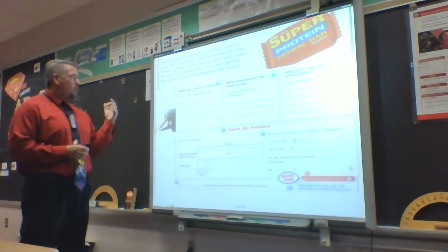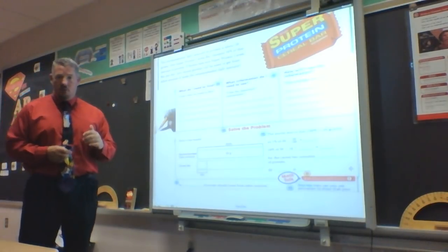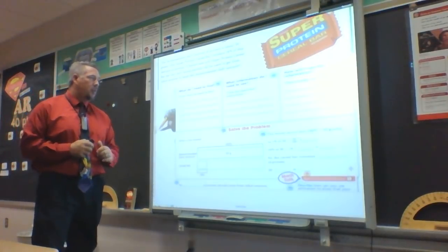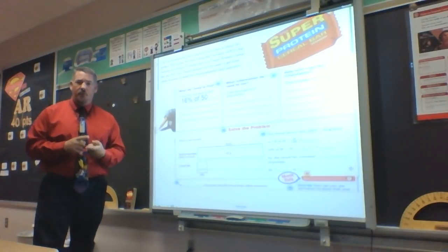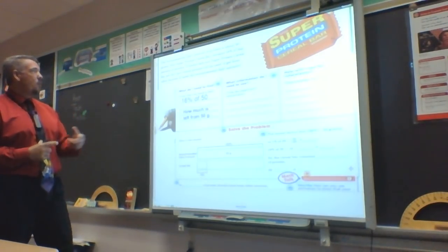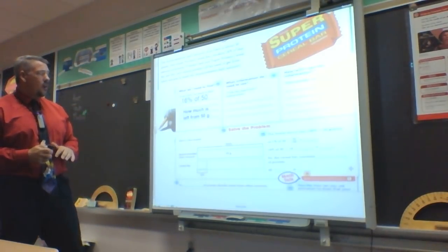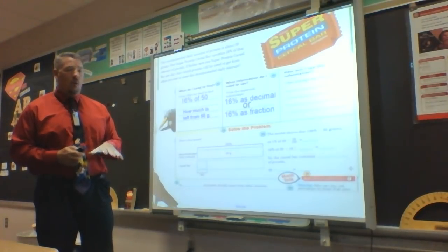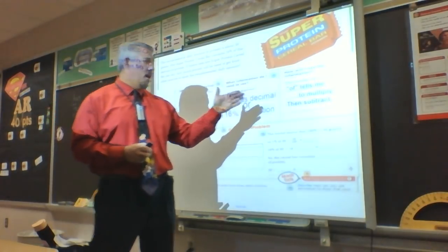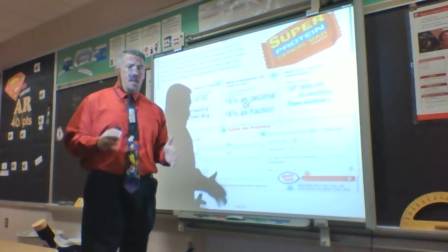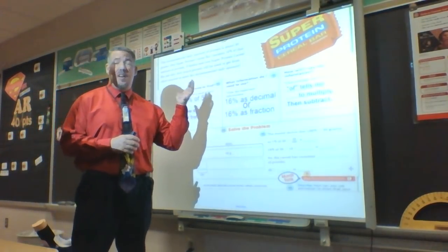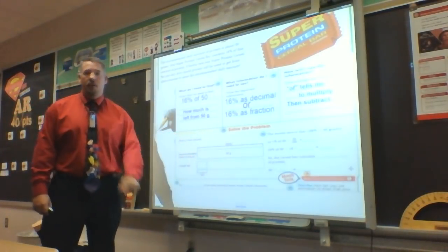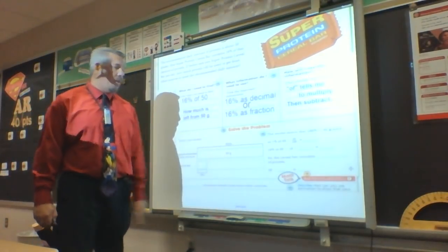What do I need to find? I need to know what 16% of 50 is, and then how much is left from the original 50 grams that is recommended. The information I'll use is 16%, converted to either a decimal or a fraction. The word 'of' tells me I'm going to multiply — that's going to be key. But then it's a two-step problem: once I find what 16% of 50 is, I'll subtract that from the original 50.